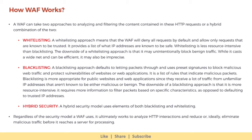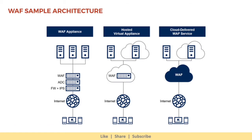Regardless of the security model a WAF uses, it ultimately works to analyze HTTP interactions and reduce, or ideally eliminate, malicious traffic before it reaches a server for processing. WAF sample architecture options include: installing a WAF appliance on-premise, hosting WAF as a virtual appliance, or using a cloud-delivered WAF as a service.